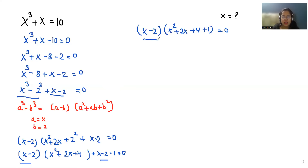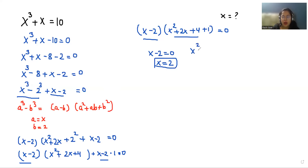So now either x minus 2 equals 0 or x squared plus 2x plus 5 equals 0. From the first case, x minus 2 equals 0, so the value of x is 2.